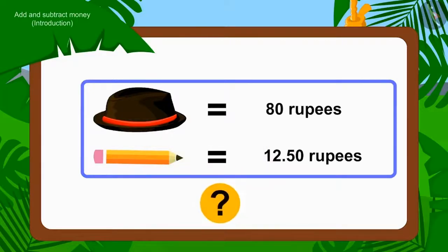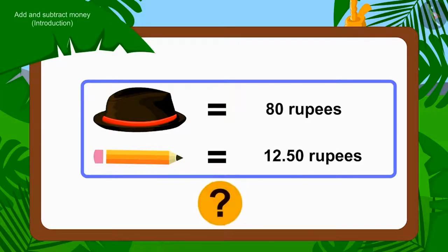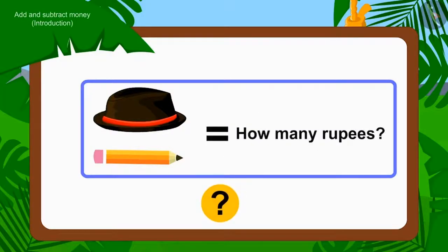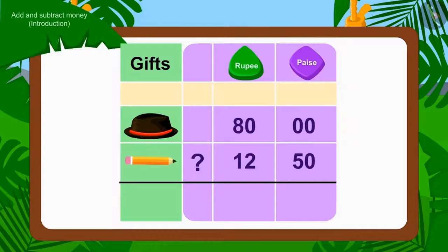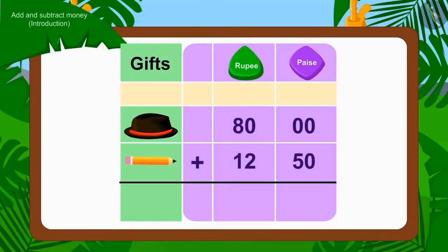Children, can you tell how much money will they have to pay to buy the gift? What operation do we have to use to do this? Absolutely right — Addition!